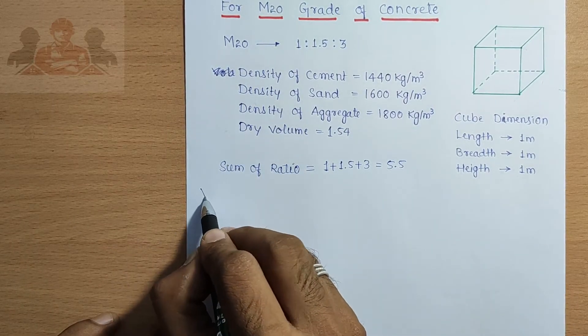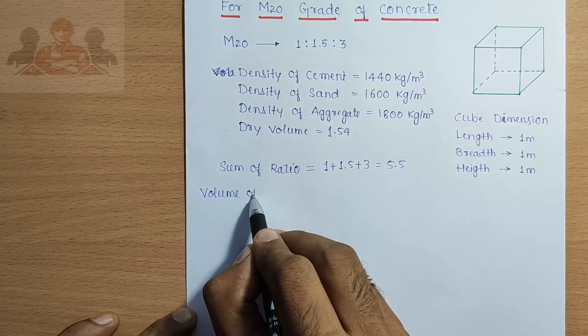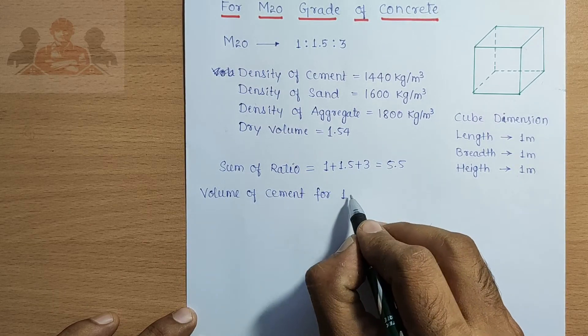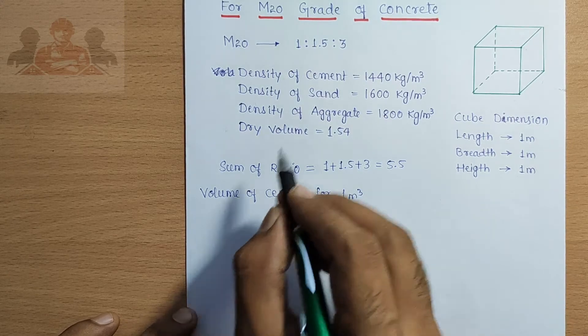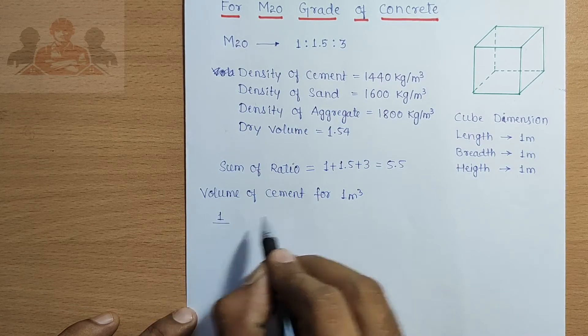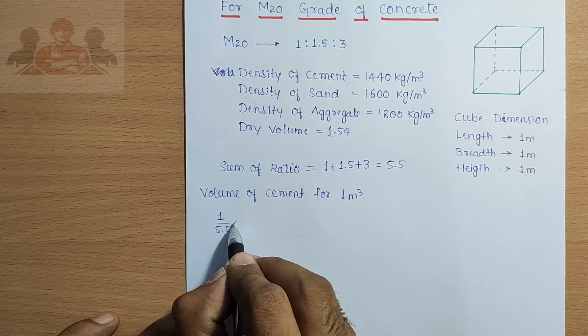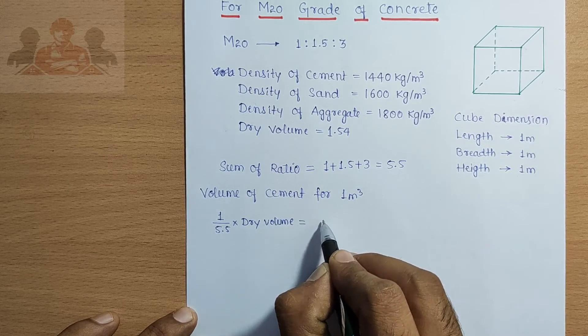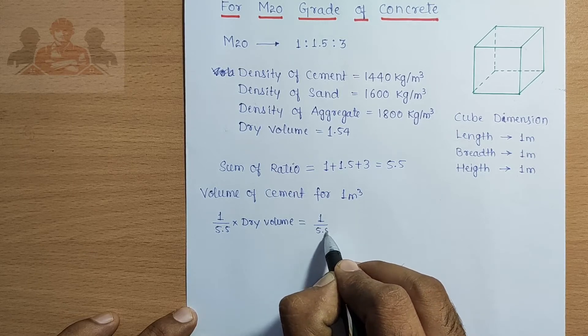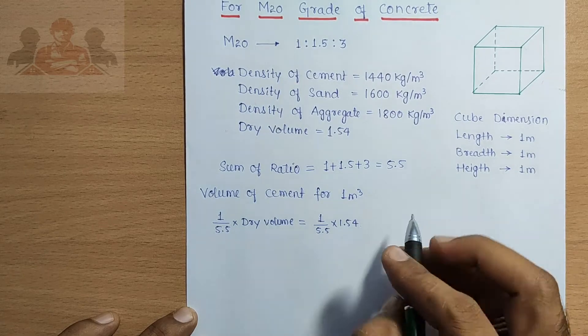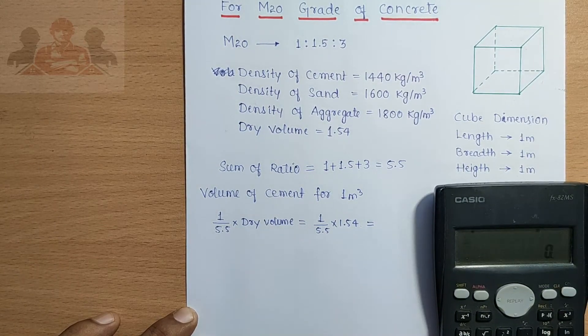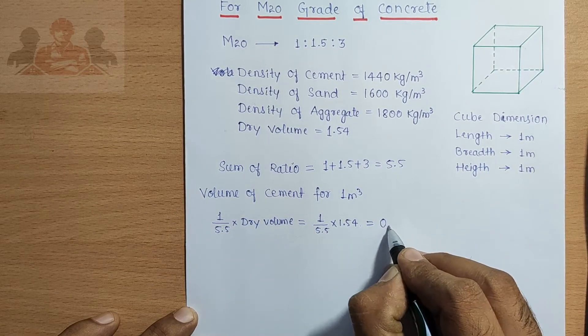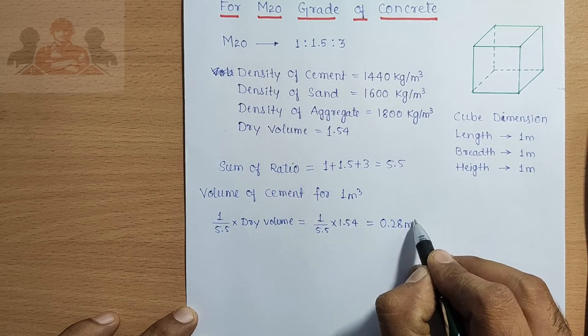Now, value of cement for 1 meter cube M20 grade. The cement proportion is 1. 1 divided by sum of ratio 5.5 into dry value 1.54 equals 0.26 meter cube.